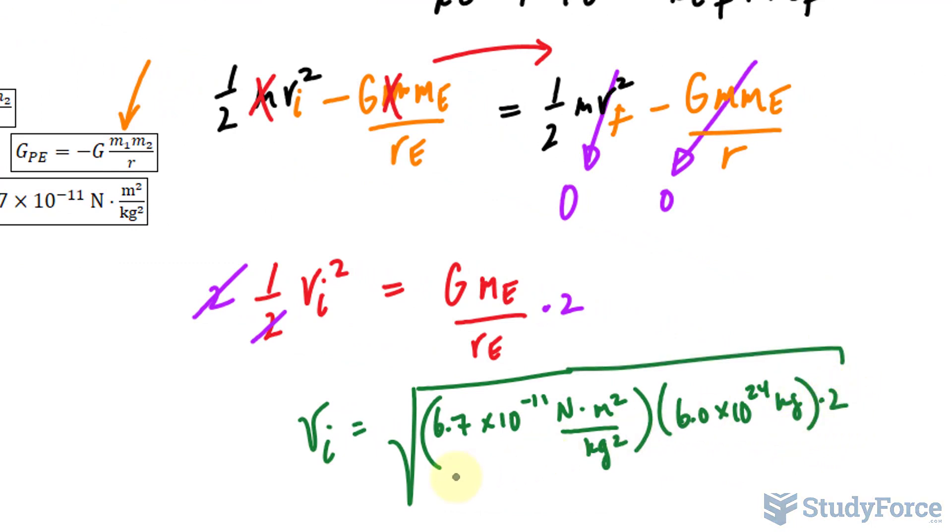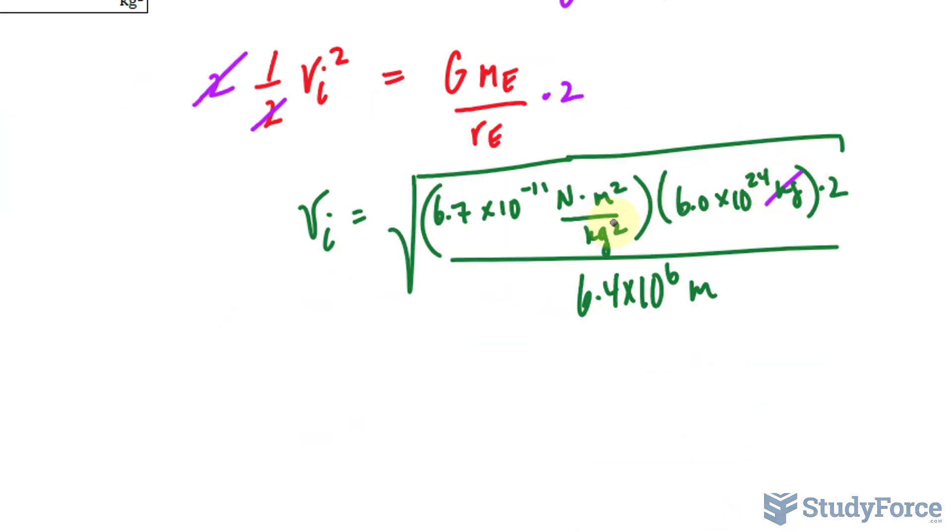Multiply by two, divided by the radius, being 6.4 times 10 to the power of 6. So this unit and one of those kilograms will cancel out. This meters and one of those meters will cancel out.